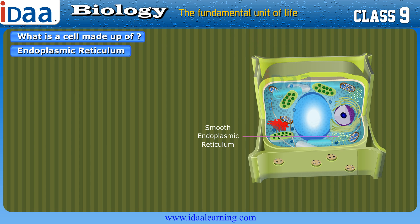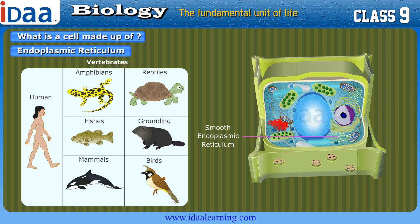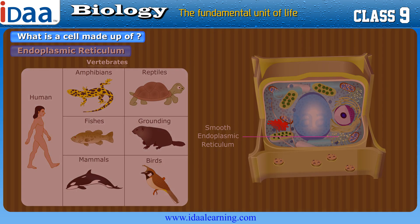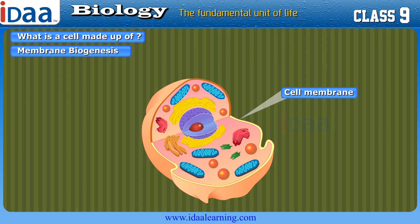Smooth endoplasmic reticulum helps in detoxifying many poisons and drugs in the liver cells of vertebrates. Membrane biogenesis is the process in which the cell membrane is formed with the help of proteins and lipids.